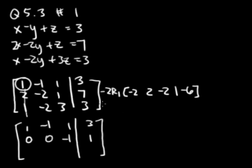And then for row 3, I'll do the same, using negative 1 times row 1 to get rid of this 1 here. So negative row 1 is negative 1, 1, negative 1, and negative 3. Now I just add: 1 and negative 1 is 0, negative 2 and 1 is negative 1, 3 and negative 1 is 2, and 3 and negative 3 is 0.